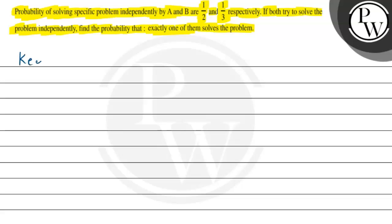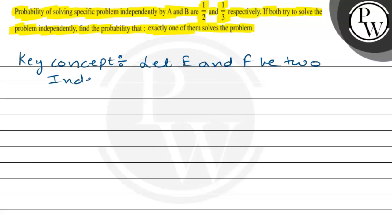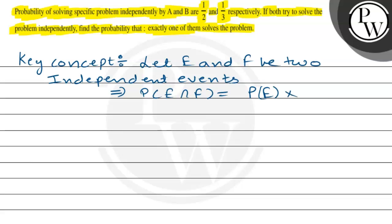Firstly, I will tell you the key concept that will help you solve this question. Let E and F be two independent events. The key concept is: if E and F are independent events, this implies that probability of E intersection F equals probability of E multiplied by probability of F.